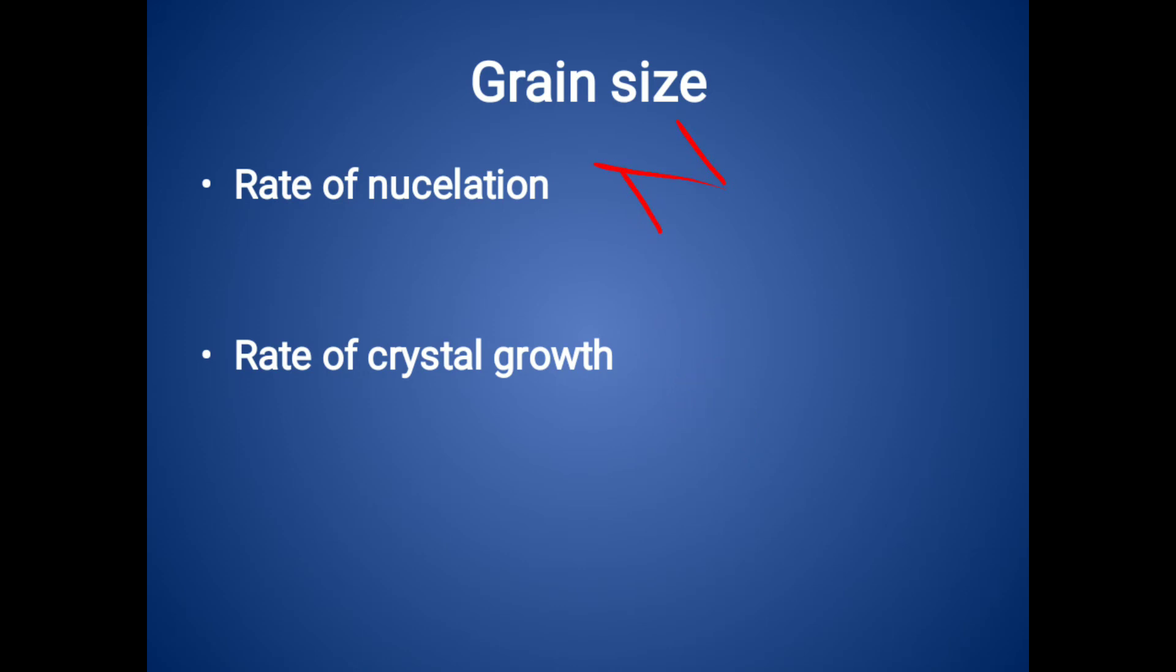To get the finest structure, rate of nucleation will be increased and rate of crystal growth will be decreased. This is achieved by using rapid cooling. By doing this process we get the fine grains. Fine grains exhibit good properties like good strength.